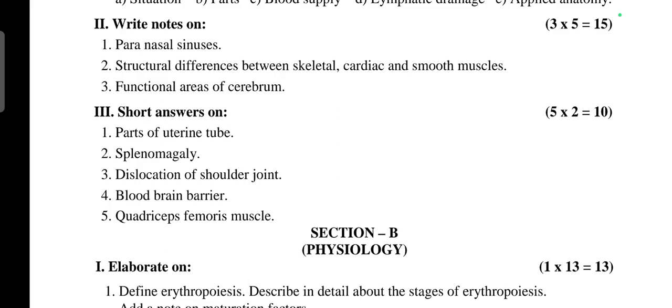Next is splenomegaly, dislocation of shoulder joint, blood-brain barrier. Next is quadriceps femoris muscle - this is 10 marks.